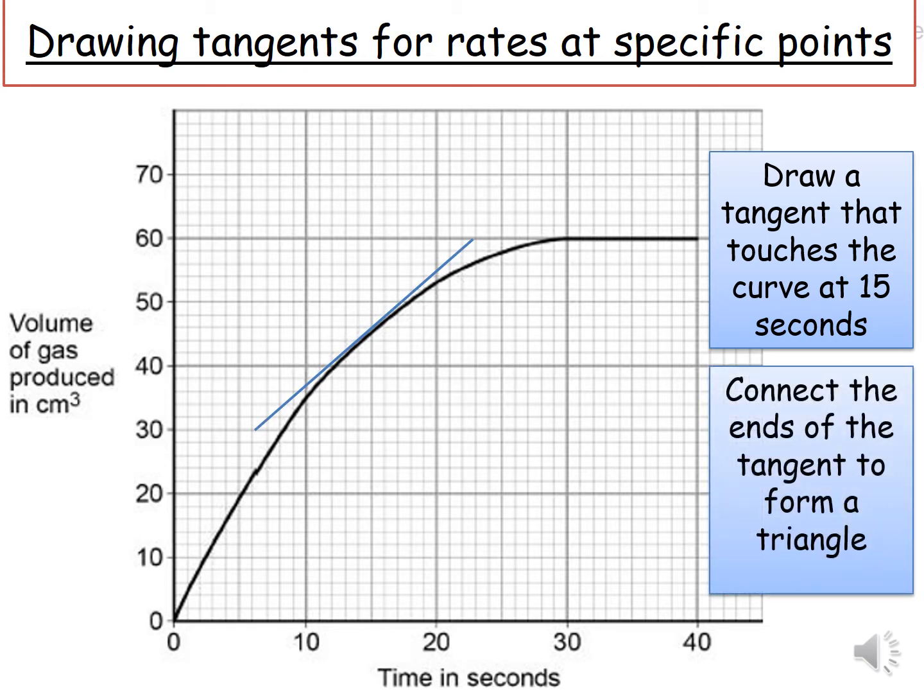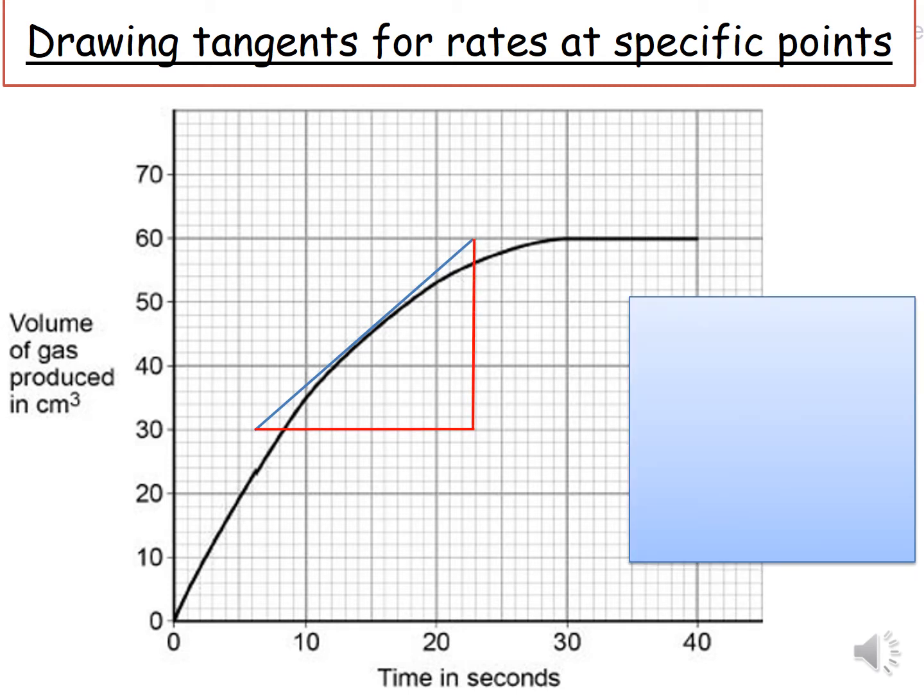First thing you do is draw a tangent that touches the curve at 15 seconds. Next, you'll connect the ends of the tangent to form a triangle. To calculate the rate, we'll use the equation, which would be the change in the y-axis divided by the change in the x-axis.